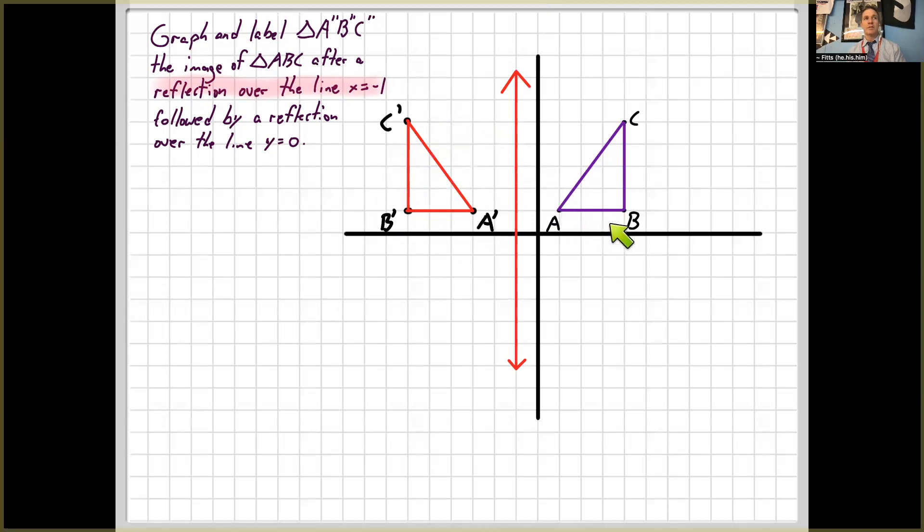Check the order of the points. Notice that this is going A, B, C in this sort of counterclockwise fashion. In this one, A prime, B prime, C prime is going clockwise. So that means I did my reflection. Well, at least I got that part right.